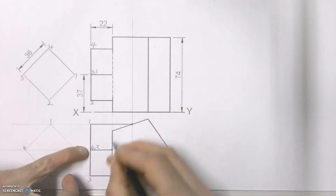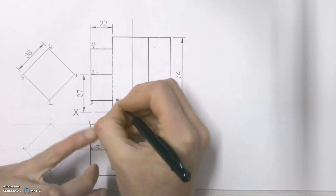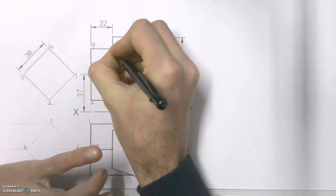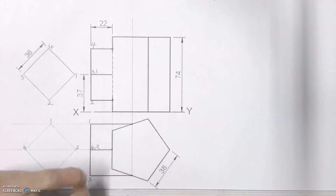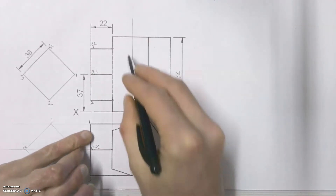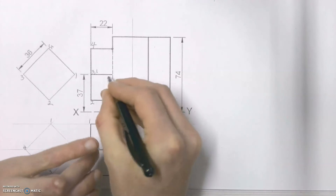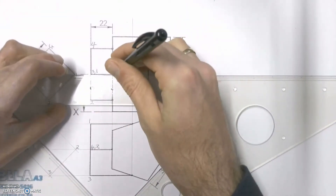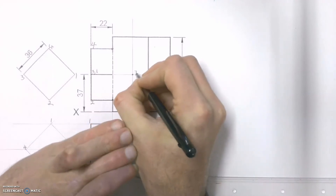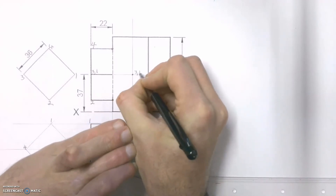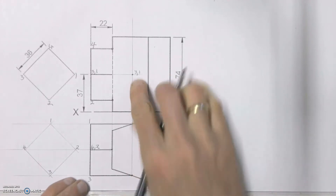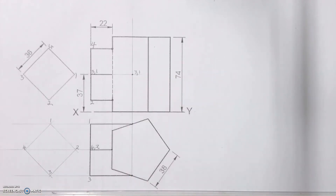Points 4 and 2 both terminate on this line, so that over there is where 2 will terminate and that's where 4 is going to terminate. Then our other two, 3 and 1, terminate on the same line, so we can just extend line 1 and line 3 and we know that will be 3 and 1, with those two lines terminating on the same point projected from our top view.